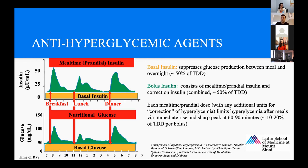One more note: in acute illness, total daily insulin requirement may increase in spite of the fact that the patient is not eating. This insulin requirement does revert back to baseline as recovery takes place. Things like inflammation, acute infection can really trigger hyperglycemia and insulin needs, and once they resolve, it can go back down to normal.